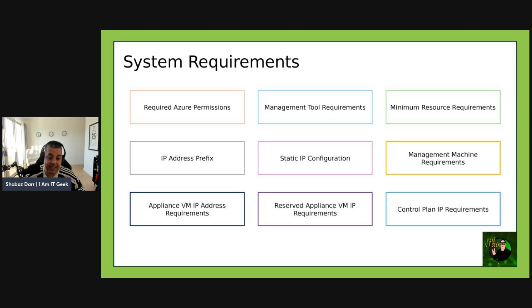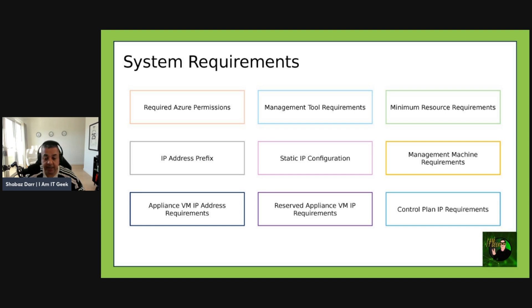From a static IP configuration perspective, if deploying Arc resource bridge to a production environment, static configuration must be used. Static IP configuration is used to assign three static IPs that are in the same subnet to the Arc resource bridge control plane, the appliance VM, and the reserved appliance VM.